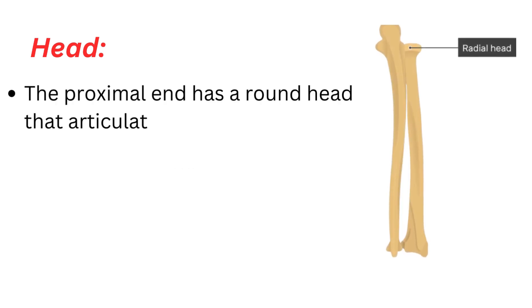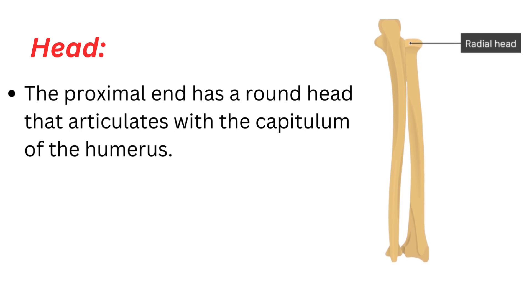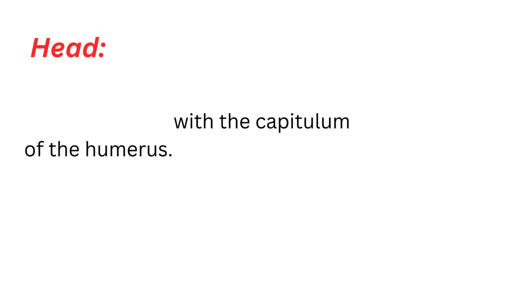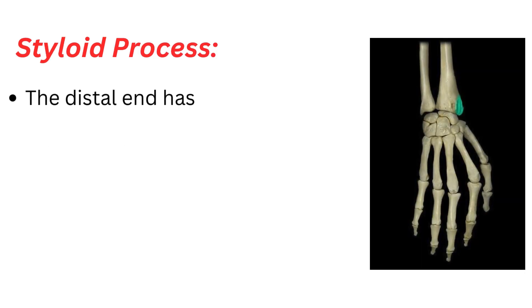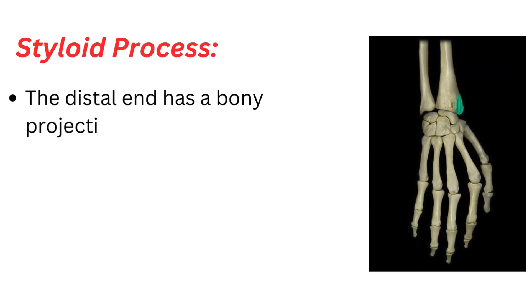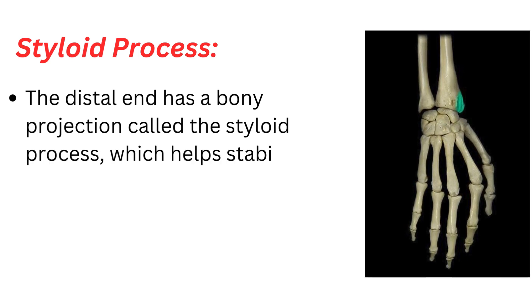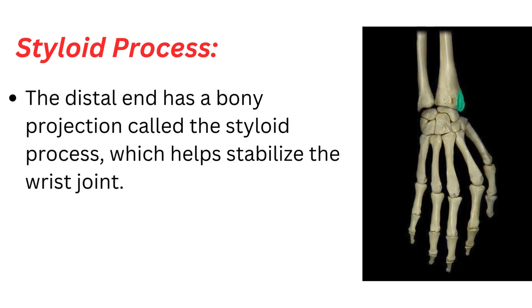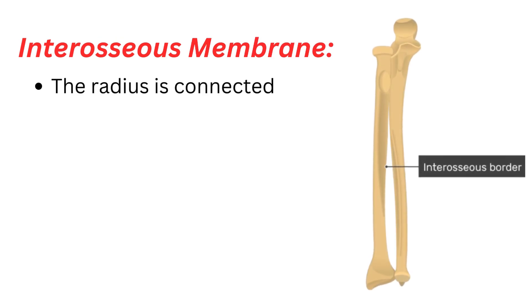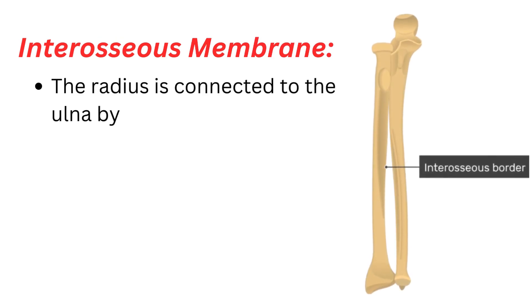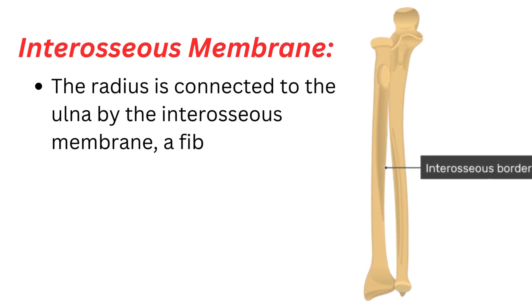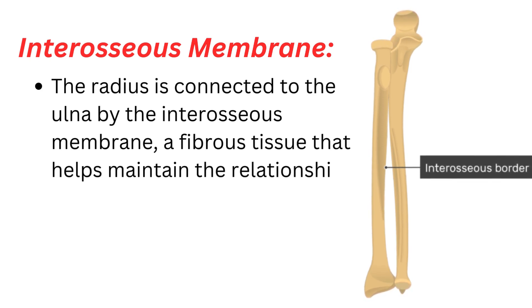Head: the proximal end has a round head that articulates with the capitulum of the humerus. Styloid process: the distal end has a bony projection called the styloid process, which helps stabilize the wrist joint. The radius is connected to the ulna by the interosseous membrane, a fibrous tissue that helps maintain the relationship between the two bones.